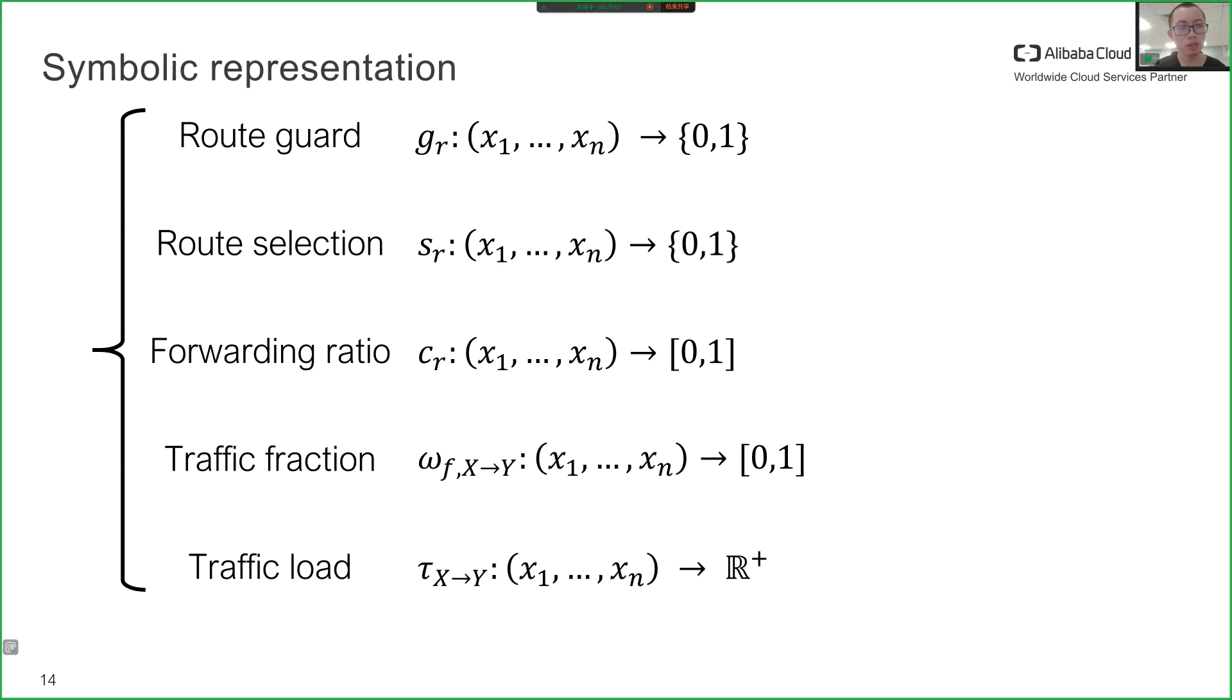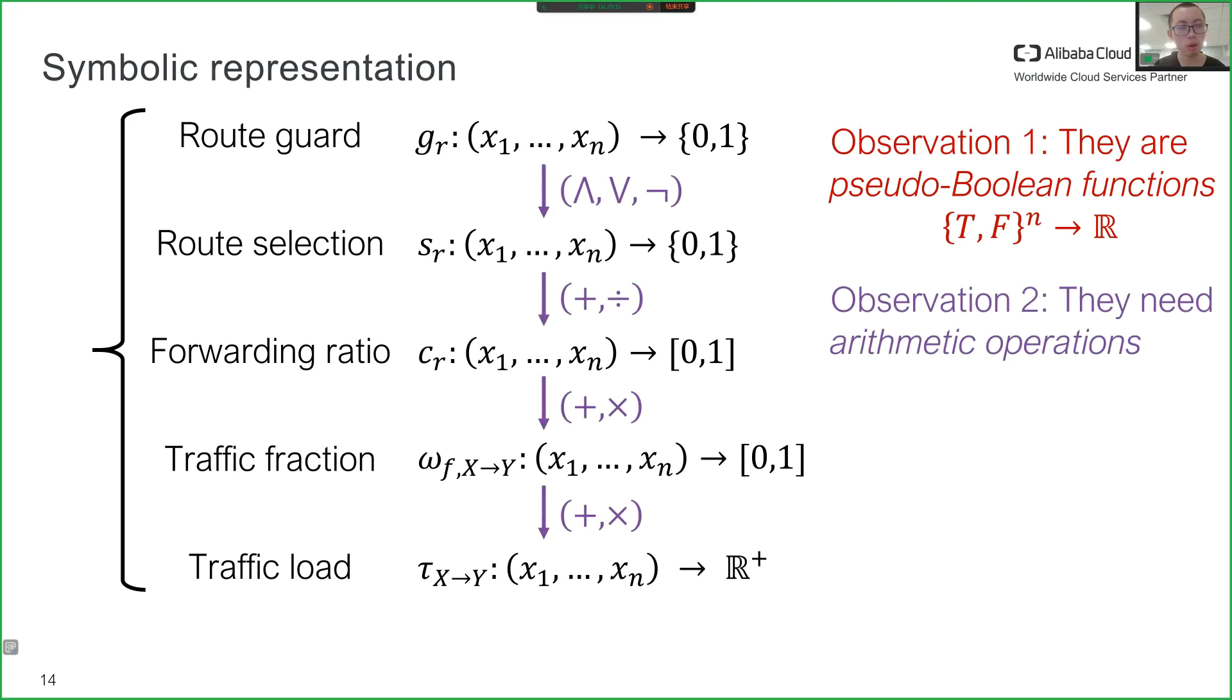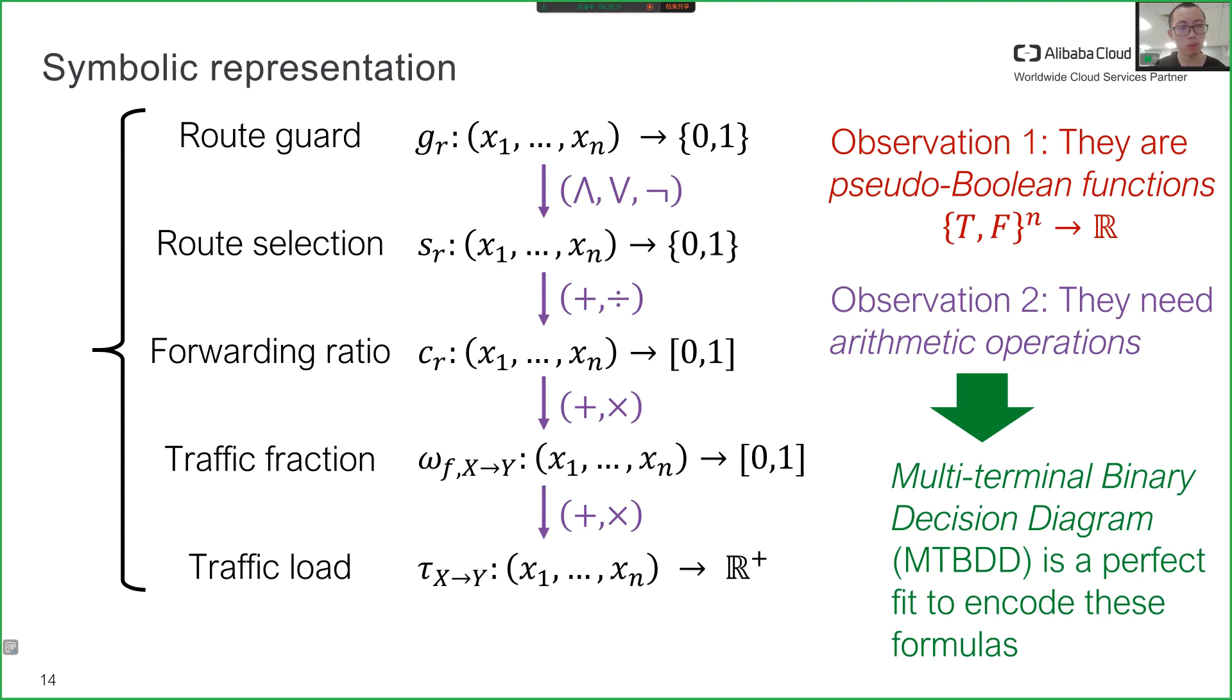After listing all the symbolic formulas, we can notice that first, they are all pseudo-boolean functions. These are functions that map boolean variables to real numbers. Second, they need lots of arithmetic operations. Based on these observations, we decided to use the multi-terminal binary decision diagram, MTBDD, which is the perfect fit to encode these formulas.